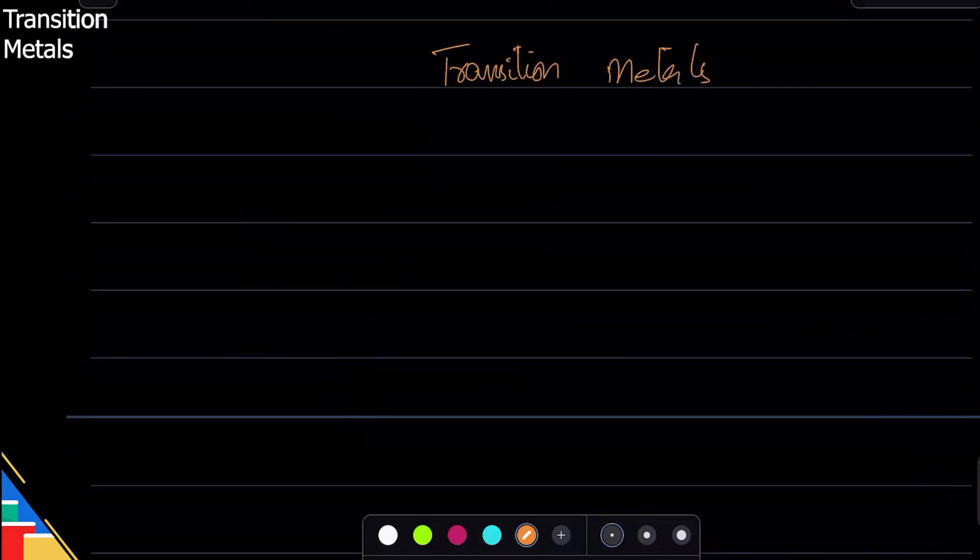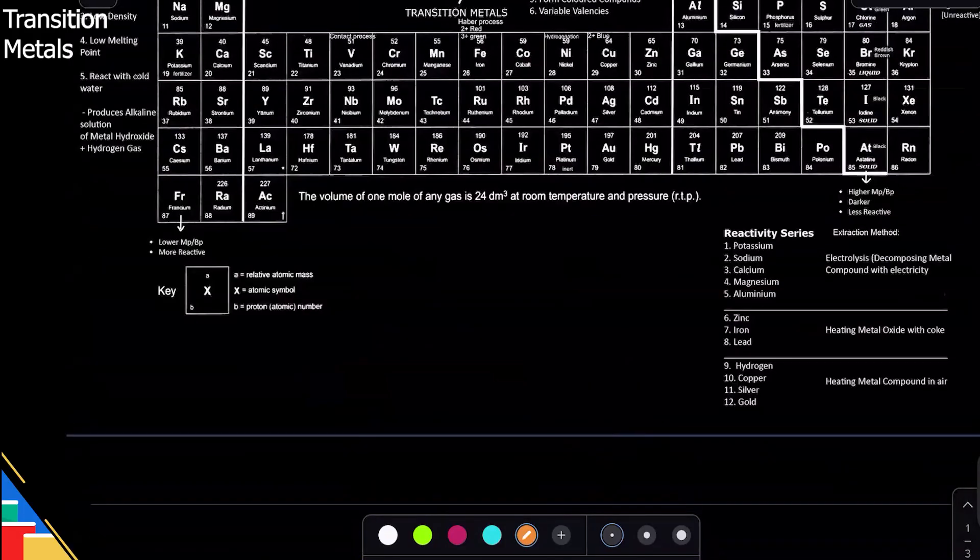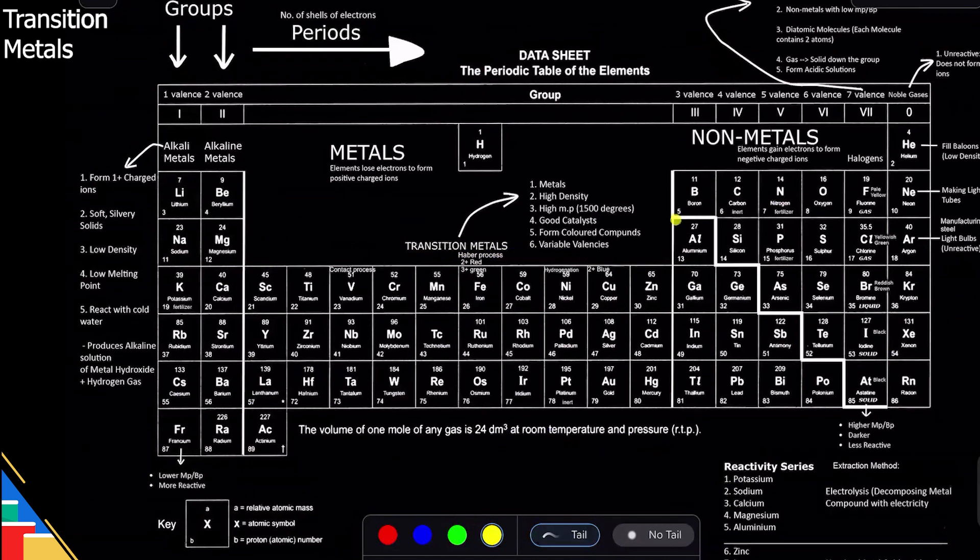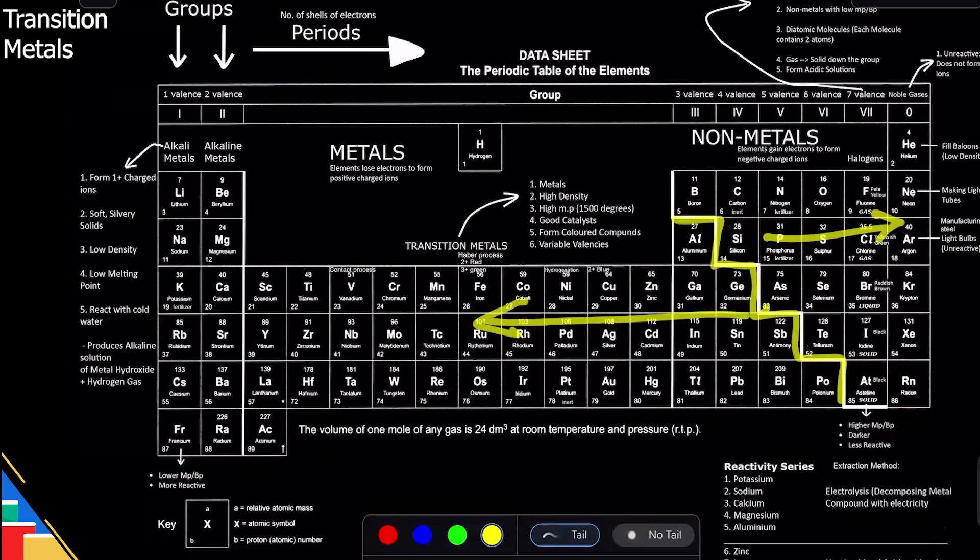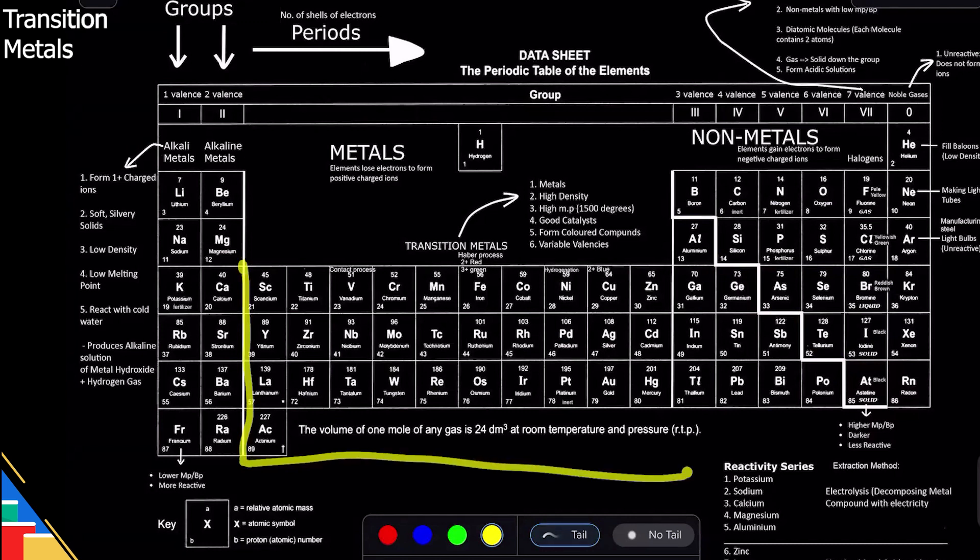Transition metals are those metals in the middle. This staircase divides metals, which are on this side, and non-metals, which are on this side. But transition metals are the ones that are between this one and this one. So these are transition metals.